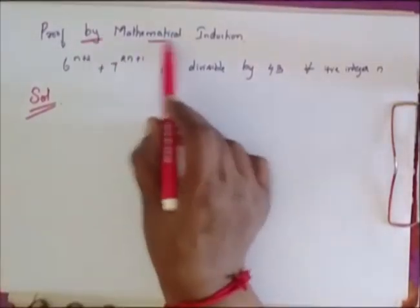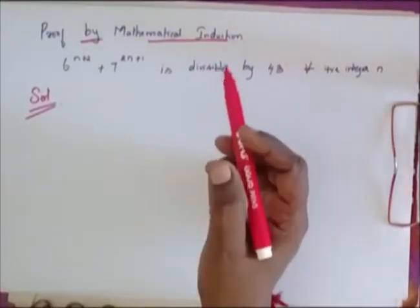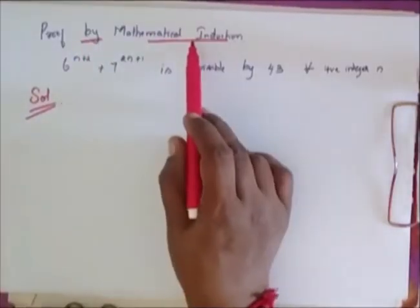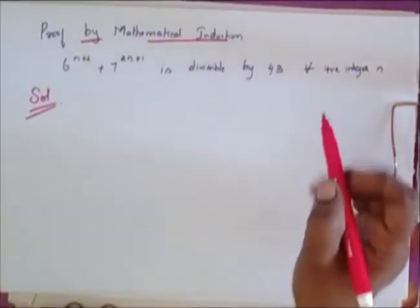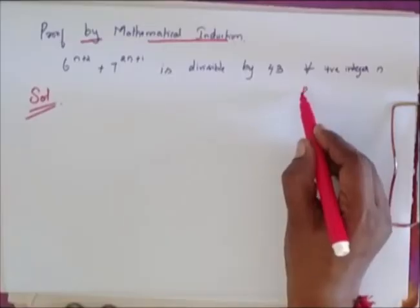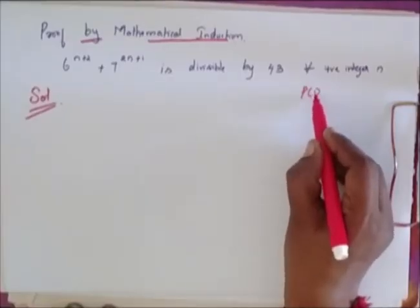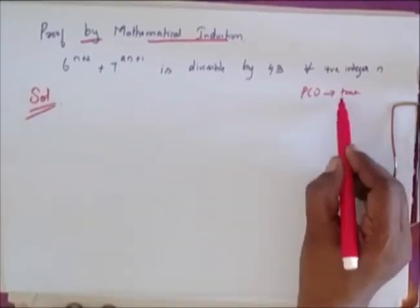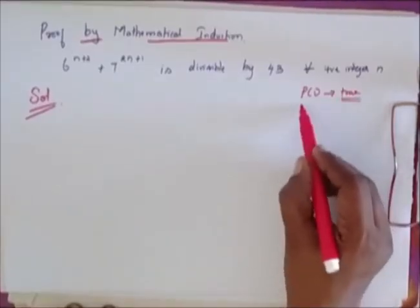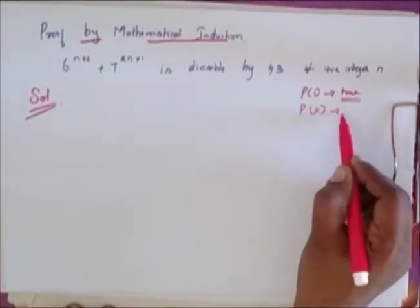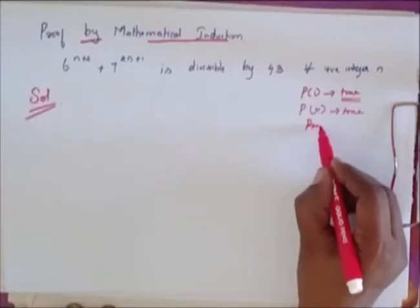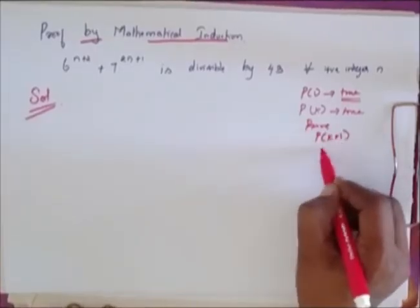Proof by mathematical induction: first you have to prove for P of 1 it is true. Since it is true for P of 1, we assume that it is true for P of K, then we have to prove that it is true for P of K plus 1.